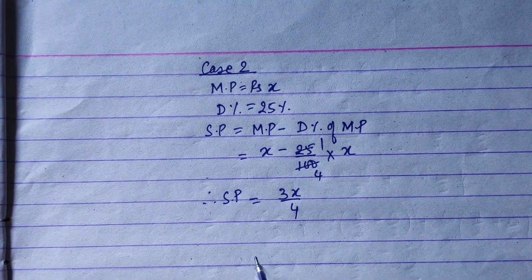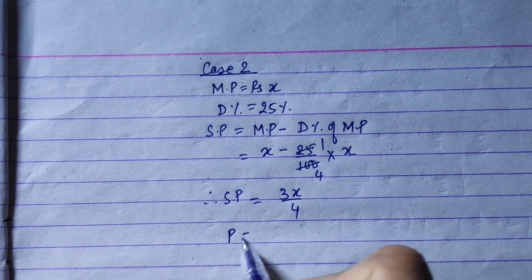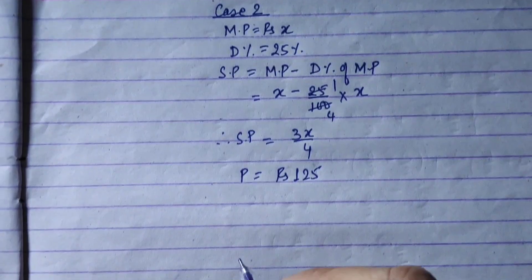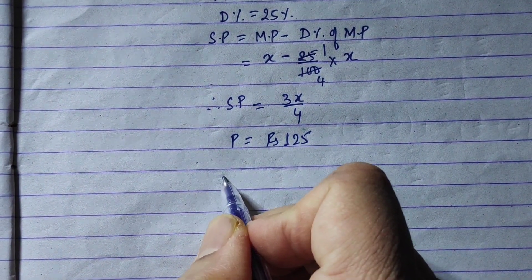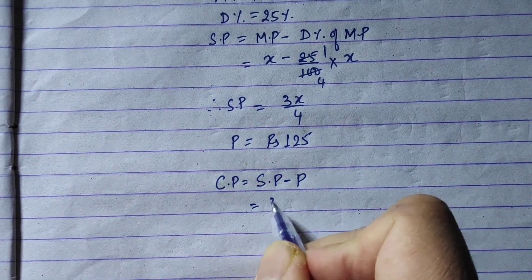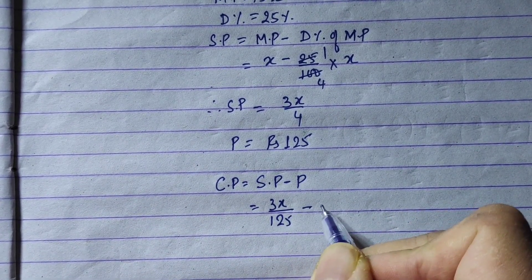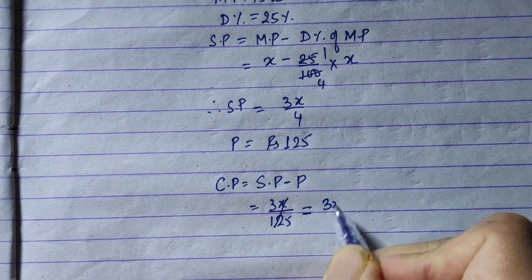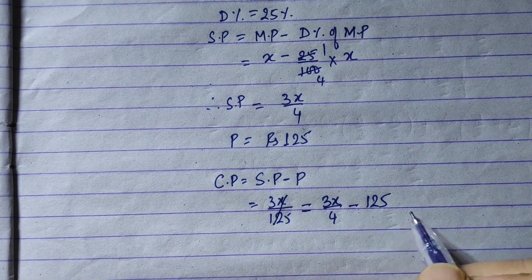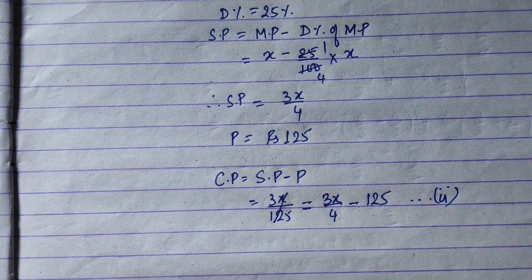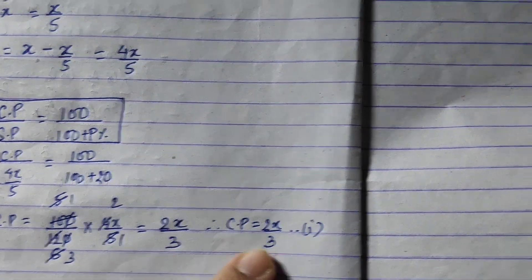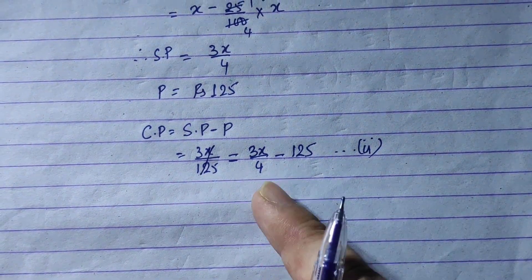In Case 2, the profit is Rs. 125. Since cost price equals selling price minus profit, CP = 3x/4 minus 125. From Case 1, CP = 2x/3. From Case 2, CP = 3x/4 minus 125.